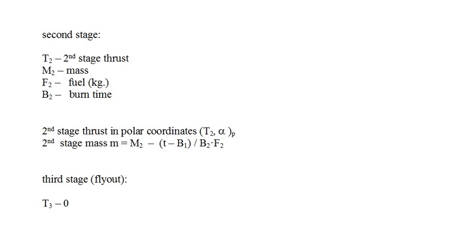We do model the decreasing mass of the second stage as the fuel burns. The time into the second stage is given by t minus B1, the burn time of the first stage, and also the flight time of the first stage in our simulation, so that the fraction of the fuel expended is t minus B1 divided by B2, the burn time of the second stage. The mass of the second stage at time t is given by M2, the mass at the start of stage 2, minus (t minus B1) over B2 times F2, the amount of fuel for stage 2. We refer to the flight of the rocket after the second stage is burned out as the third, or fly-out stage. During the fly-out stage, the rocket is in free-fall.